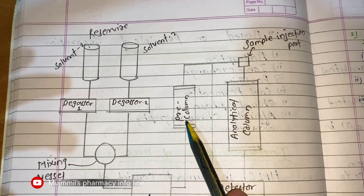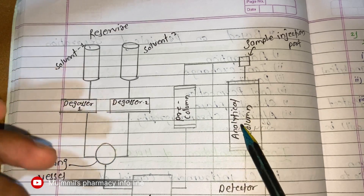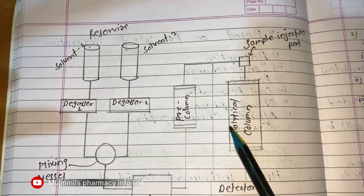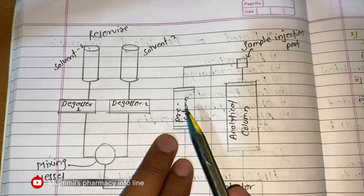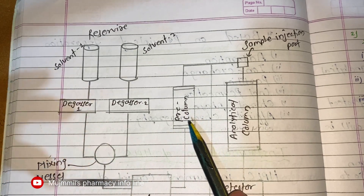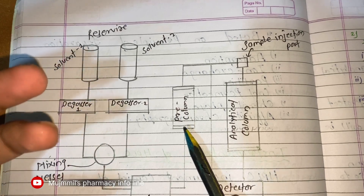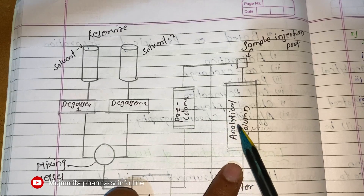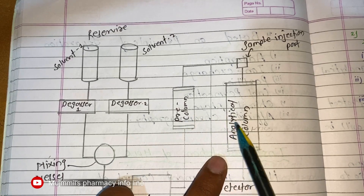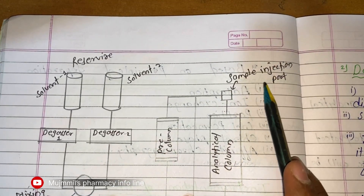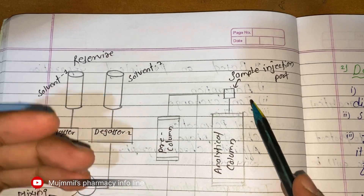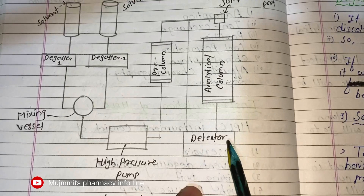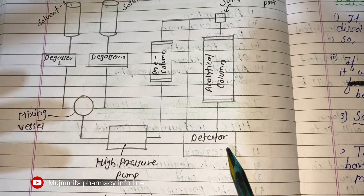The pre-column is also known as a guard column — it protects the analytical column, which is very costly. If any impurity or defect is present in the mobile phase, it will be minimized or detected at the pre-column, so it cannot affect the analytical column. There is a sample inlet port from which we inject our sample into the analytical column; from the analytical column, the sample is detected by the detectors and we get the result.